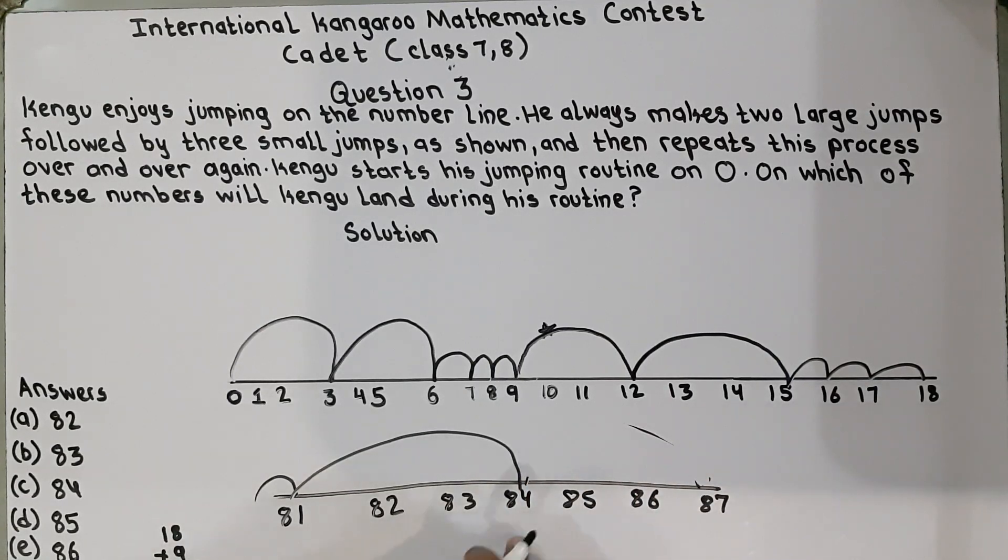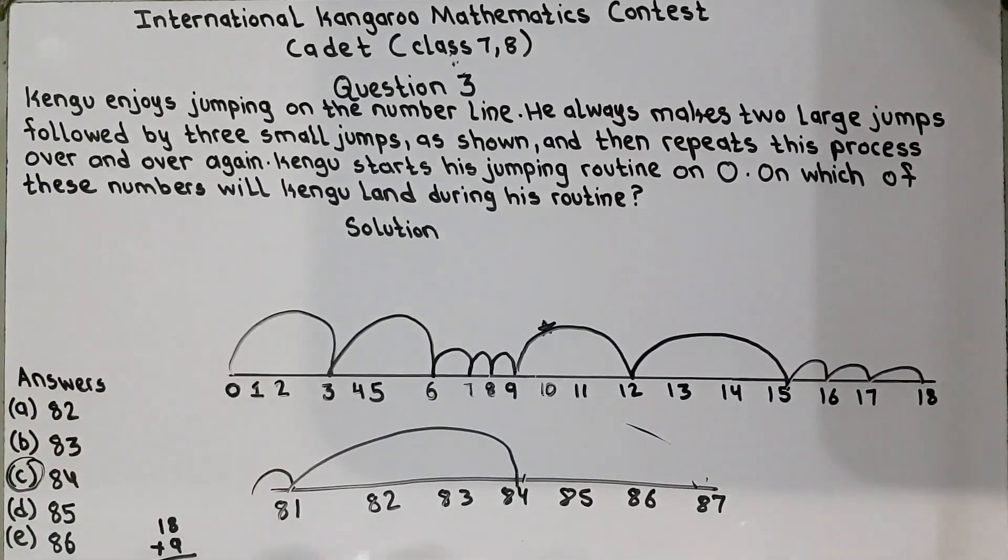It means this is where kangaroo lands after repeating his routine. So C contains 84 and this is the answer and hence the question is solved.